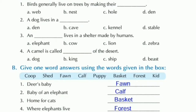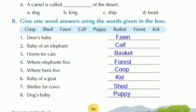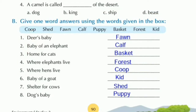Now question B: Give one word answers using the words given in the box. The words are: coops, shed, fawn, calf, puppy, basket, forest, and kid. First: Deer's baby is known as fawn, F-A-W-N.